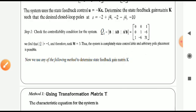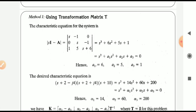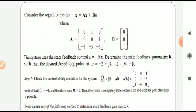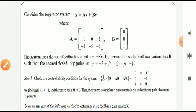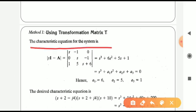We can determine the state feedback gain matrix K by any of the following methods. For the examination, you need to apply any one method — you do not need to perform all three. For Method 1 using transformation matrix T: first we find the actual characteristic equation of the system, determinant of sI minus A, which gives s³ plus 6s² plus 5s plus 1. Comparing with the standard polynomial form, we obtain coefficients a1, a2, a3.